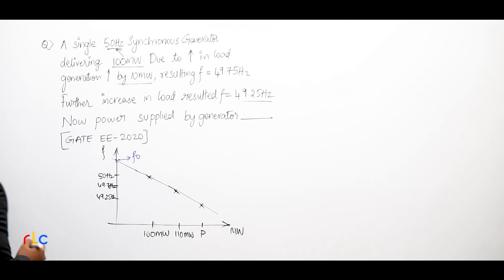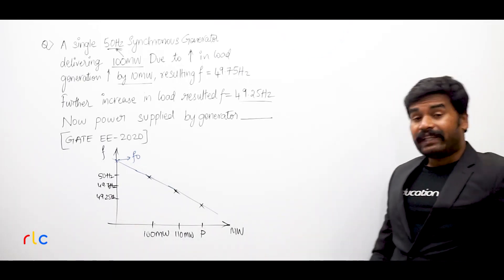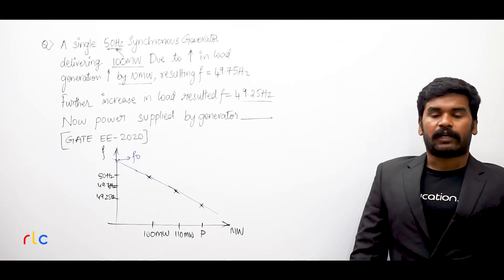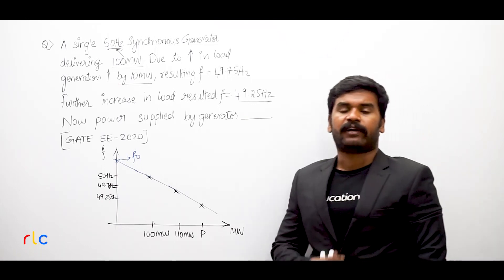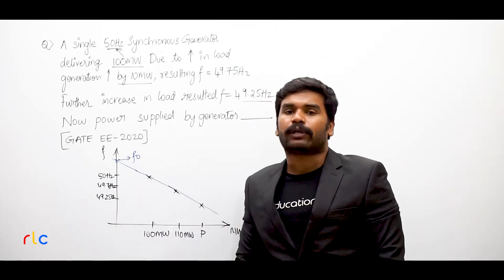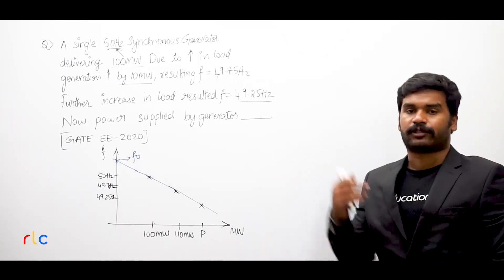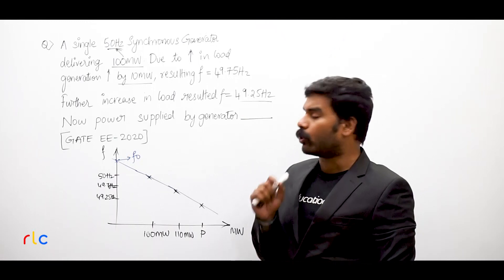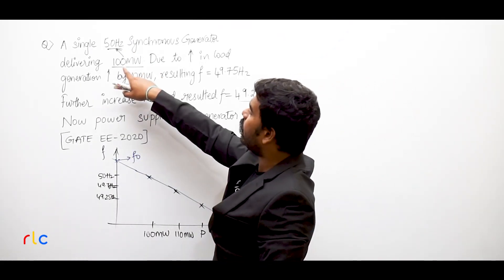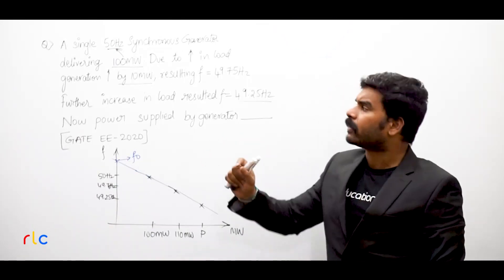If you extend the curve back, this point corresponds to F0, the no-load frequency. Here is a common mistake: when the question states a 50 Hz generator, many students assume F0 equals 50 Hz. I have seen students attempt this question by taking F0 as 50 Hz and they end up with wrong values. The question clearly states 50 Hz is the frequency when delivering 100 megawatt — it is a loaded frequency, not the no-load frequency.